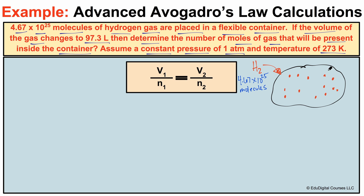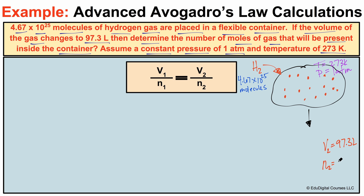We also know that the temperature is staying the same — held constant at 273K — and the pressure is staying the same at one atmosphere. The volume of the gas is going to change. This container's volume is going to change to V2, which is 97.3 liters. We don't know yet if it's getting bigger or smaller, but from that we need to determine how many moles of gas will be present after the volume changes to 97.3 liters.